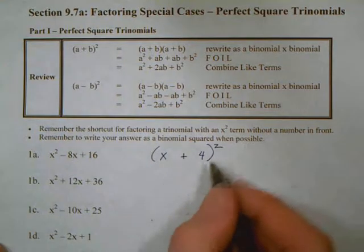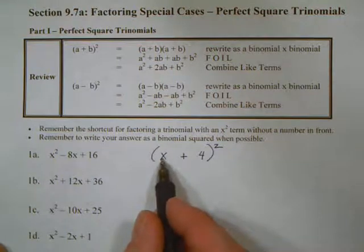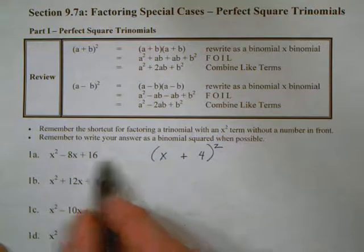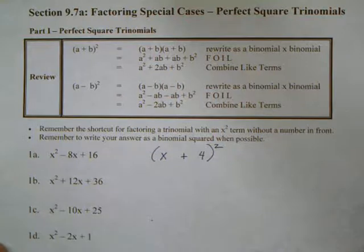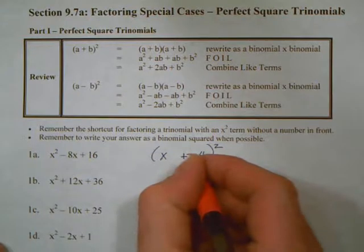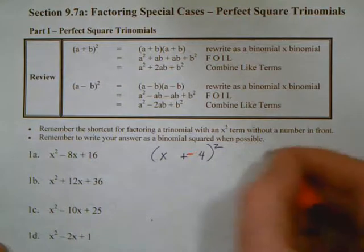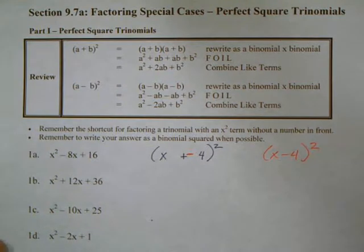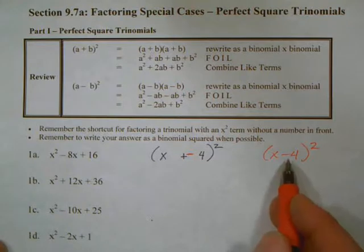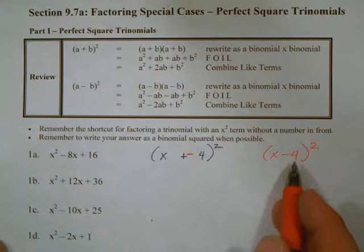x and 4. Now the question is, 4 times x is 4x, doubled is 8x. Because that's a minus there, we need to make sure that this is a minus there. So we should say, really, x minus 4 squared. I guess you could say plus or minus, but really it's better to be written as x minus 4.